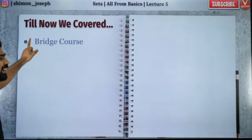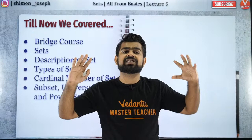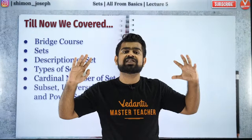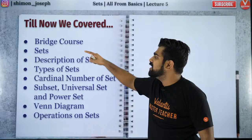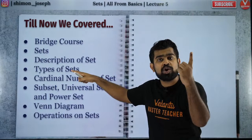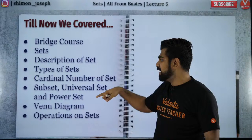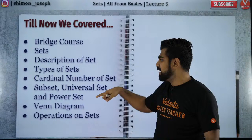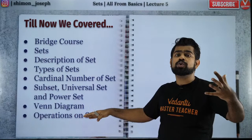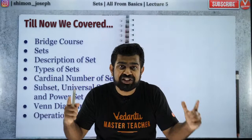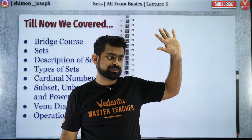Shall we begin? Let's have a look at what we have done so far. We did the bridge course — the videos are already present in the channel. We covered: definition of a set, how to describe a set in roster form and set builder form, types of sets — empty set, null set, infinite set, finite set, equal and unequal sets, cardinal number, subset, universal set, power set. Last class I taught you Venn diagram problems and operations on sets — union, intersection, complement, difference.